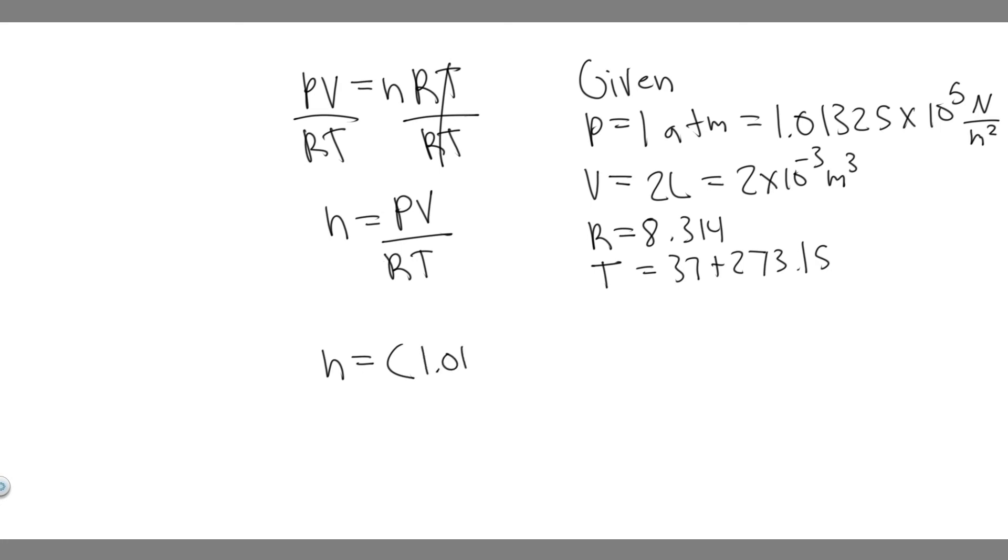So we have 1.01325 times 10 to the 5, that's the pressure. We've got the volume, which is 2 times 10 to the minus 3. And we're going to divide by 8.314, which is R. And then T, I'm just going to leave it, I'm not going to add it yet. So 37 plus 273.15.